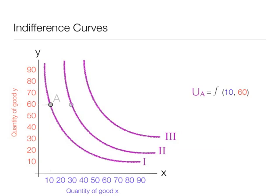Now if I draw in another point to the right of point A, let's call that point B. In this case I have 30x and 60y, the same y as before. So utility at point B is a function of 30x and 60y.